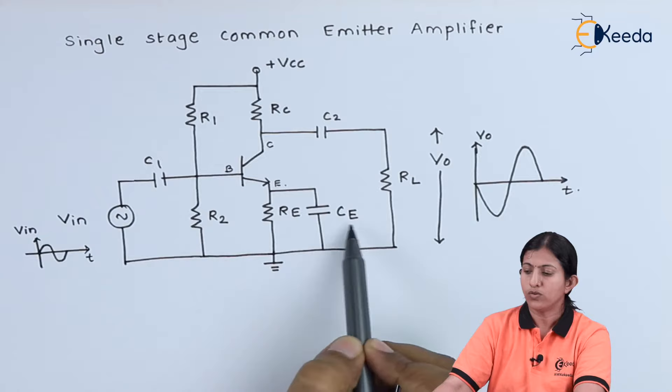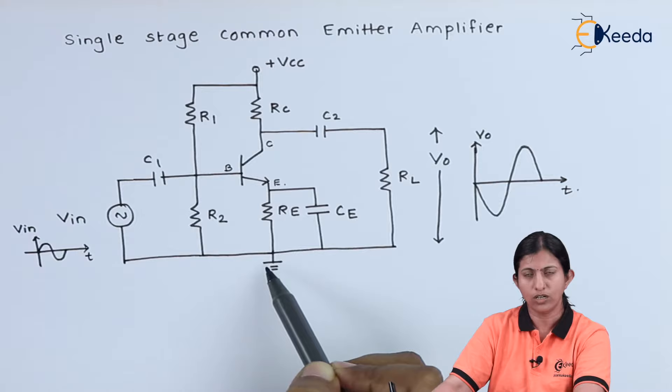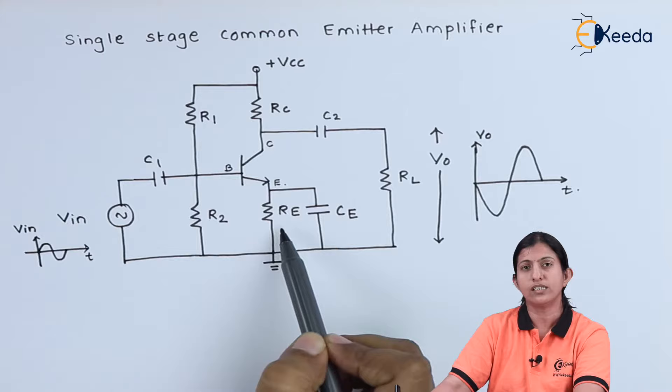We are using capacitor CE which is called the emitter bypass capacitor. This capacitor bypasses the emitter current to the ground so there is less voltage drop across Re, which increases the voltage gain at the output.